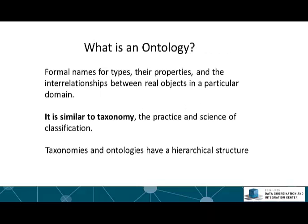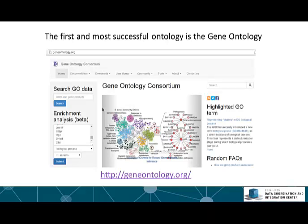So what is an ontology? Often it is favorable to organize metadata into ontologies. Ontologies have multiple advantages over other types of metadata organization. Ontologies provide formal names to real-world objects in a specific domain, and also provide descriptive properties of those objects and their relationships. Ontologies are similar to taxonomies, which is the science of classification. Both ontologies and taxonomies have a hierarchical structure where the objects are arranged based on their similarity and have a parent-child relationship.